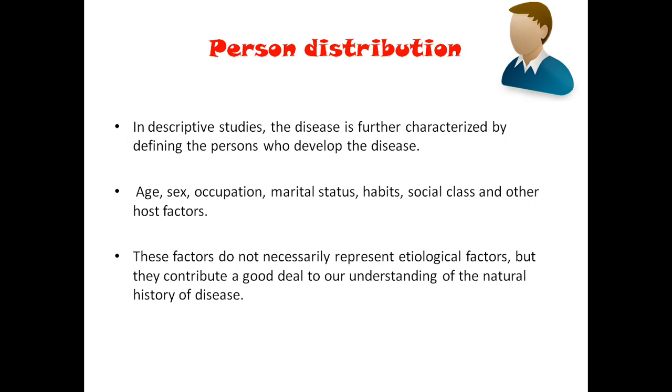Person distribution: how widely the disease is distributed within different groups — according to age, sex, occupation, marital status, habits, and social class. We collect data from persons and categorize them into age, gender, occupation, marital status, etc.